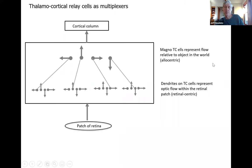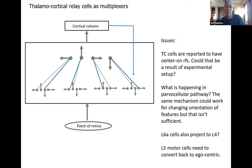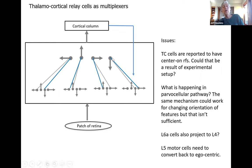The issues: thalamocortical cells are all reported to have center-surround or center-on/center-off receptive fields. They're not reported to have flow or movement direction sensitivity. That's a problem for this theory — I need these cells to represent movement, not just center-surround responses. For this theory to work, that observation has to be wrong. Could that be an artifact of experimental setup? If I take an animal, anesthetize it, or do this in a brain slice in a Petri dish, what would happen with the dendrites? One possibility is they're all enabled. If all dendrites are enabled, the cell would respond regardless of which direction movement is occurring — and that might look like a center-surround receptive field. A center-surround receptive field could be the union of all possible movements when orientation context hasn't been selected.